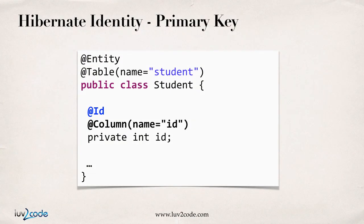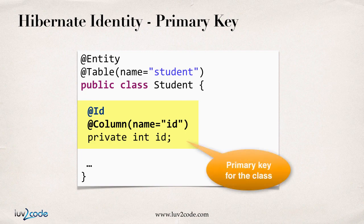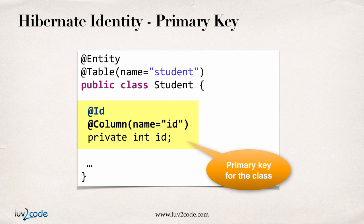In Hibernate, when we build a class we make use of an annotation — @Id. This @Id basically tells Hibernate that this given field is a primary key, so this field maps to a column in the database table and that column name is ID. We basically leave it up to the database to actually generate a primary key for us.